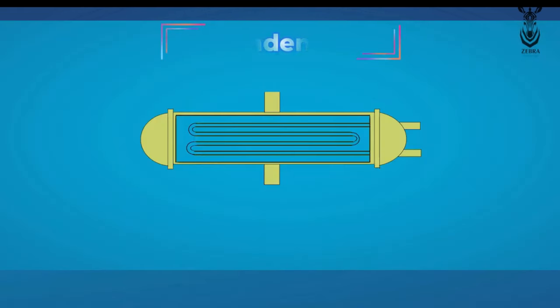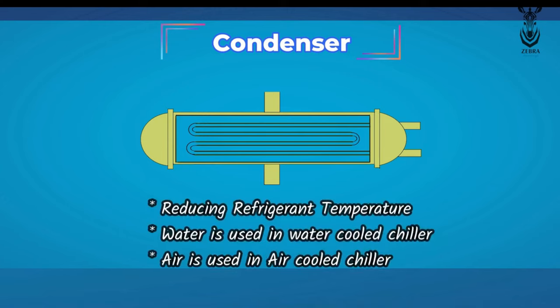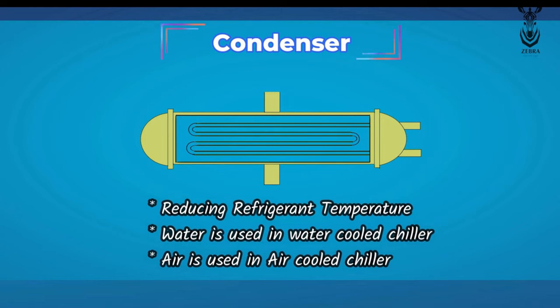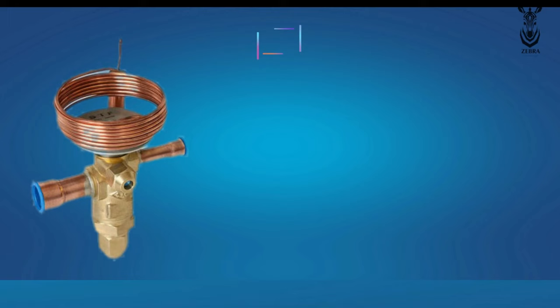Next, the condenser. The important job of the condenser is to reduce the temperature of the refrigerant entering it. In a water-cooled chiller, we use water to reduce the temperature of the refrigerant. In an air-cooled chiller, we use air to reduce the temperature of the refrigerant.